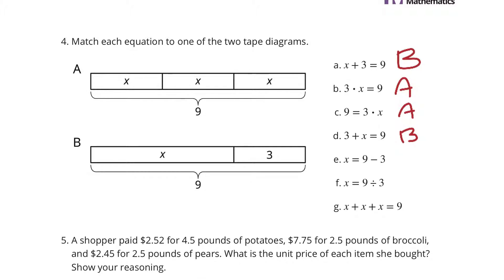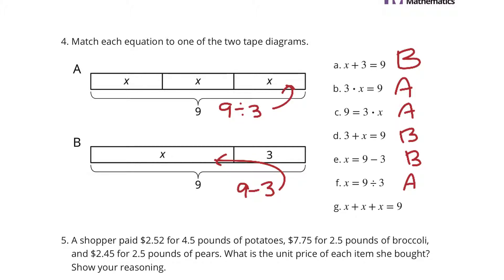A little trickier: x equals 9 minus 3. If I were to find this x I would need to take 9 minus 3, and that gives me x, so that's B. Then x equals 9 divided by 3 — we have 9 divided into 3 equal parts to get 1x, so that's A. And the last one: 3 x's equaling 9 — that's also A.